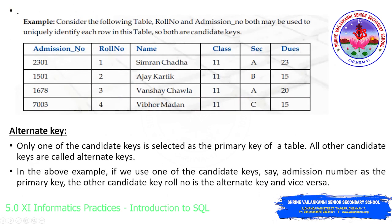Here, they have given admission number and roll number. Both can act like a primary key. It is up to us — we can set admission number as the primary key and roll number as the candidate key. When we execute queries, I will teach how to create primary keys and foreign keys. Alternate key: all other candidate keys apart from the primary key are called alternate keys — for example, name, class, section, dues.